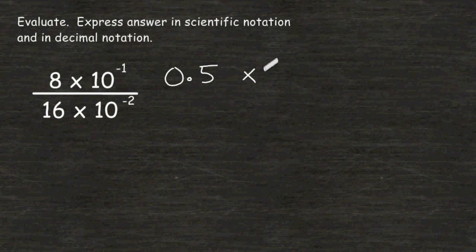Next, we take the base of 10 and we subtract the exponent at the top, which is negative 1, from the exponent at the bottom, which is negative 2. And when you see consecutive negatives or you are subtracting a negative, remember we have to consider those positive. So now we can rewrite this as 0.5 times 10 to the first power.